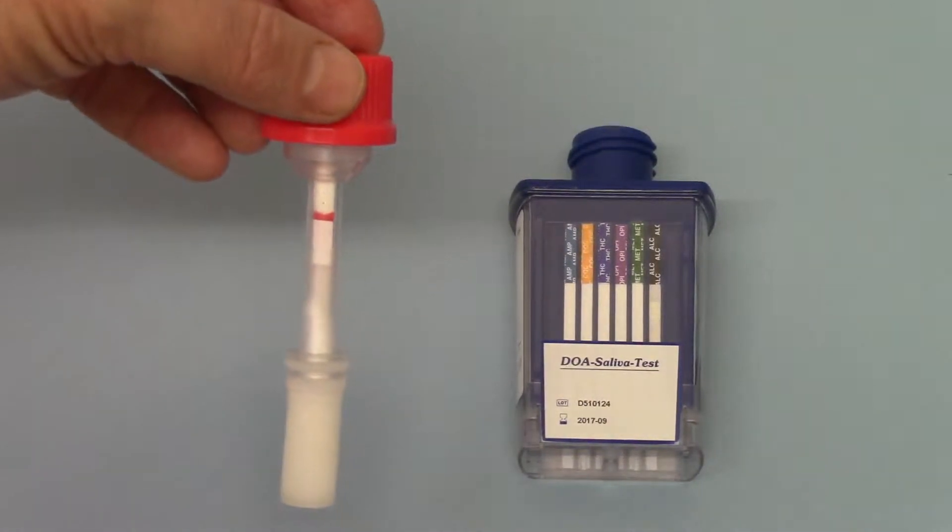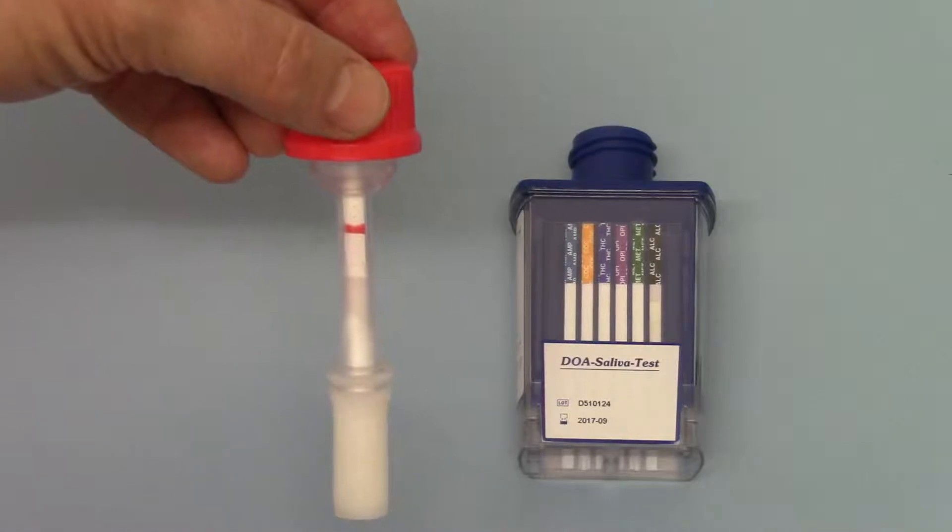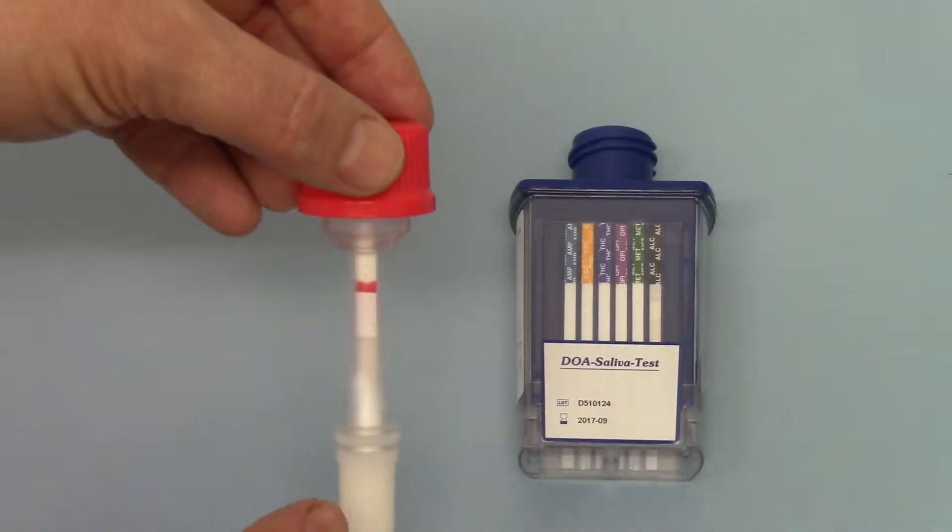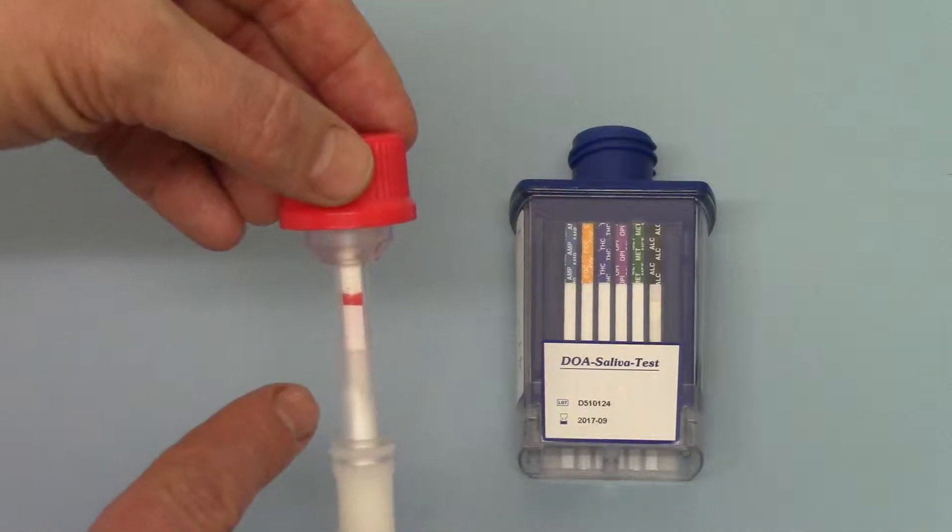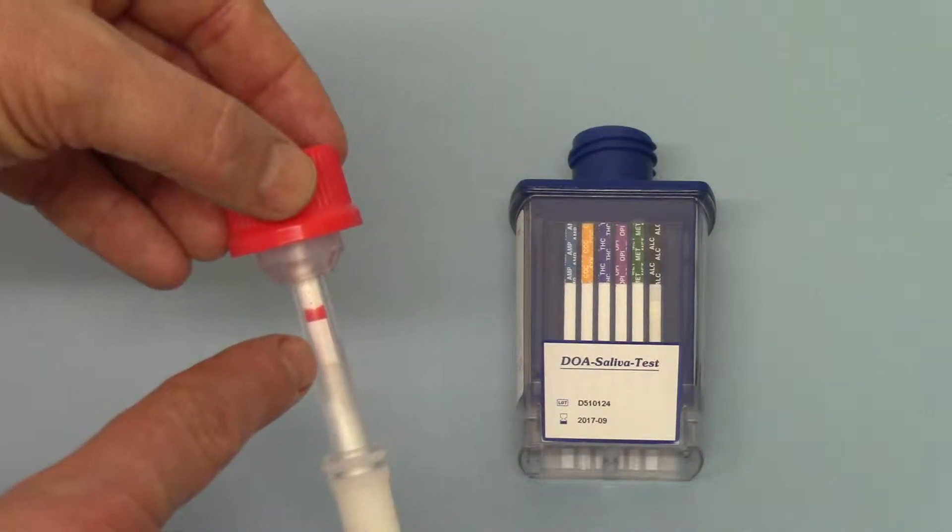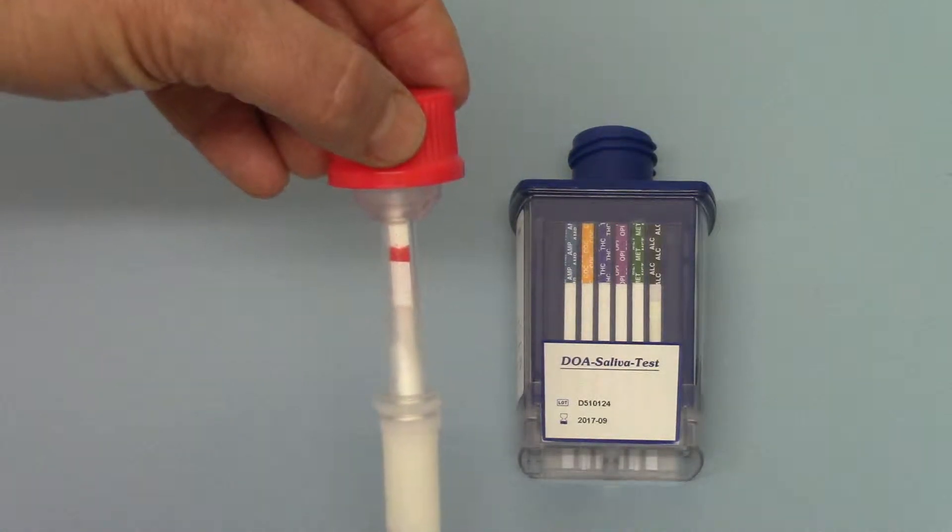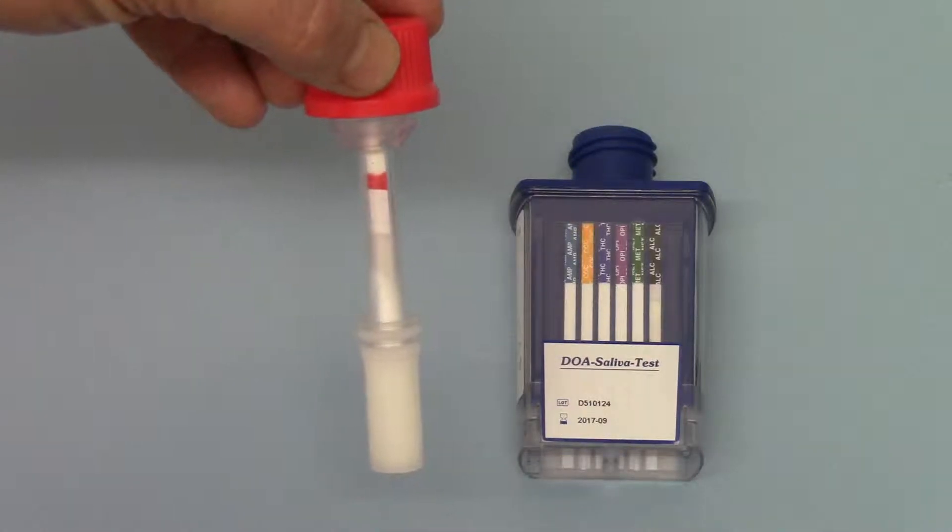Okay, welcome back to part two. Now we're showing you the saliva indicator. When sufficient saliva has been absorbed by this membrane above the white section, the top section will go a bright red color. You can see that still tracking up, indicating that sufficient saliva has been absorbed.